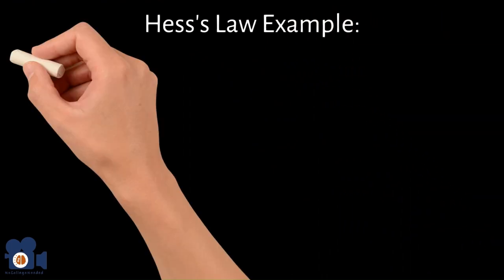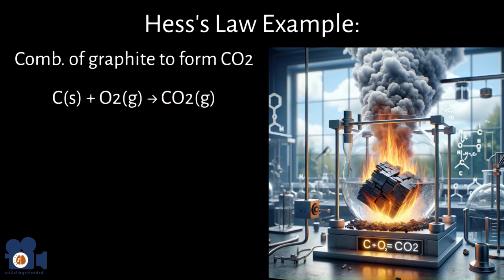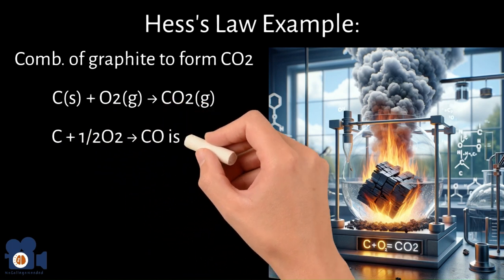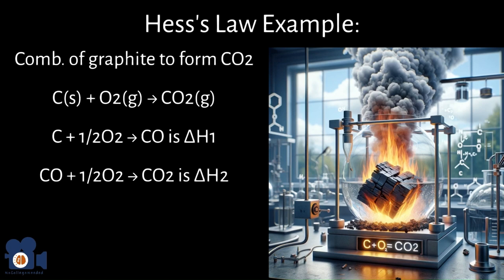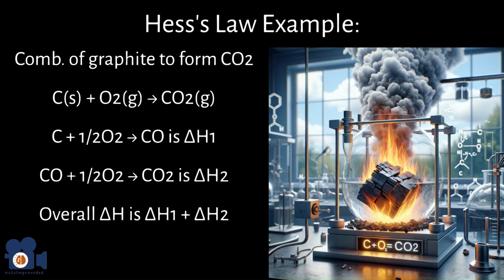An example of Hess's law is the combustion of graphite to form carbon dioxide: C(s) + O₂(g) → CO₂(g). Direct measurement of ΔH may be challenging. However, if the ΔH for the formation of carbon monoxide from C (C + ½O₂ → CO, ΔH₁) and the ΔH for the oxidation of CO to CO₂ (CO + ½O₂ → CO₂, ΔH₂) are known, these reactions can be combined to represent the overall reaction. The overall ΔH is simply ΔH₁ + ΔH₂, demonstrating that the total enthalpy change is the same regardless of how CO₂ was formed.